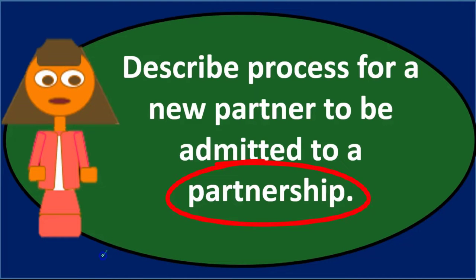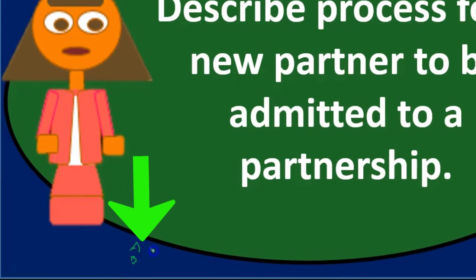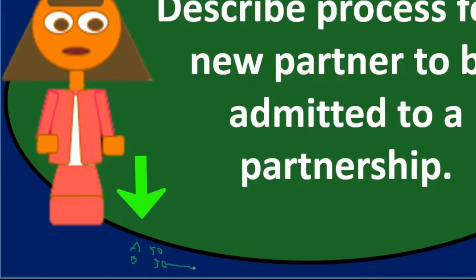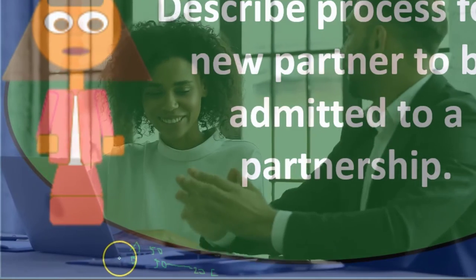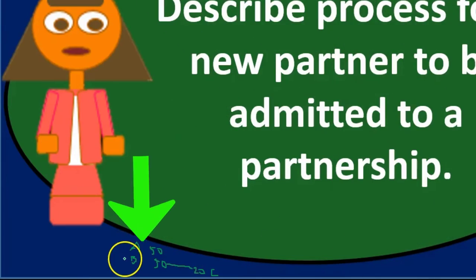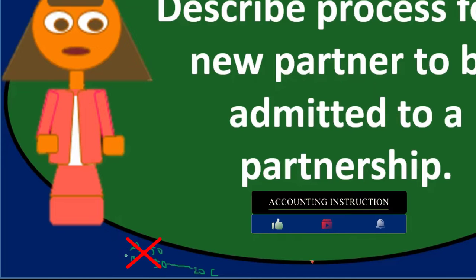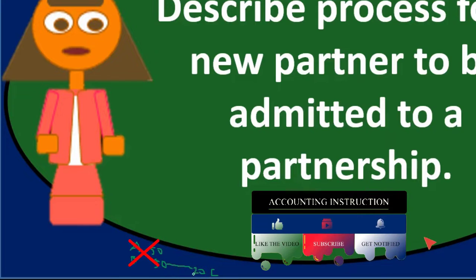One way is that we have a partnership — say A and B are the partners, owning 50/50. One partner, say B, could sell a portion of their partnership interest — say 20% — to C. If that happens, B would typically need approval from A to sell that portion to C. Once done, this is really a transaction between B and C, not between the partnership and the new partner.